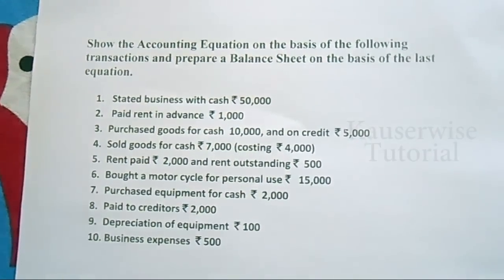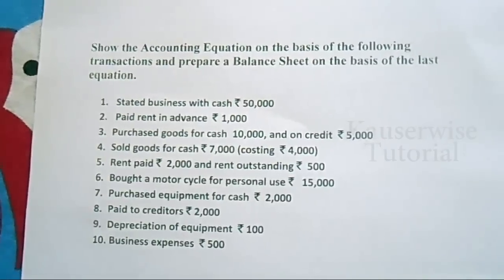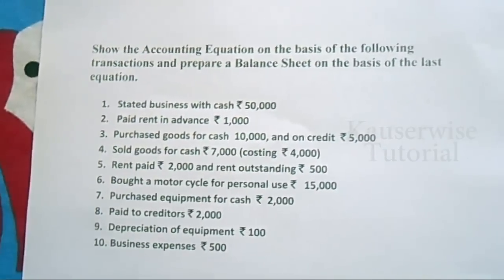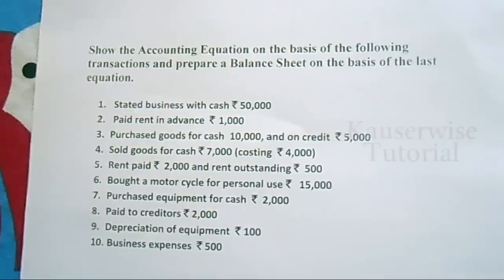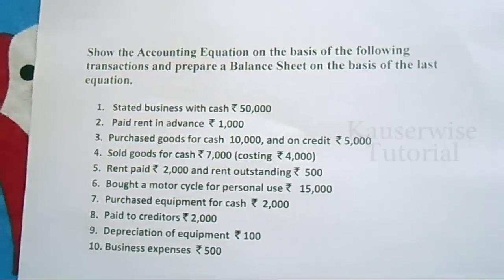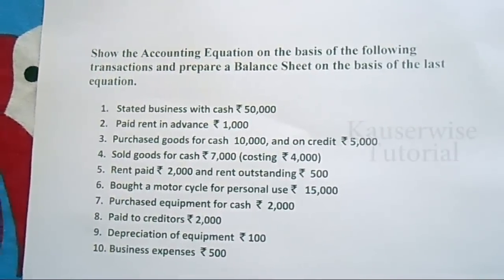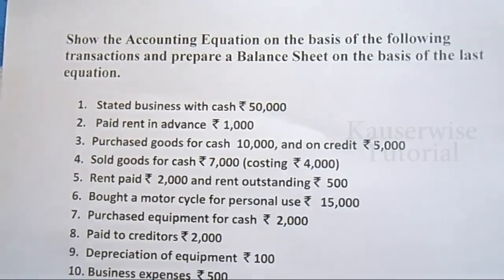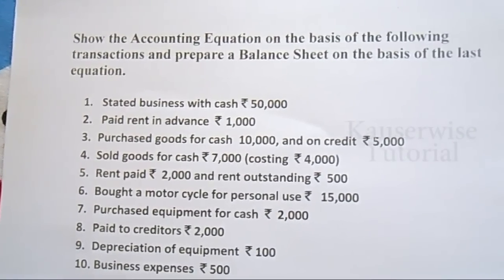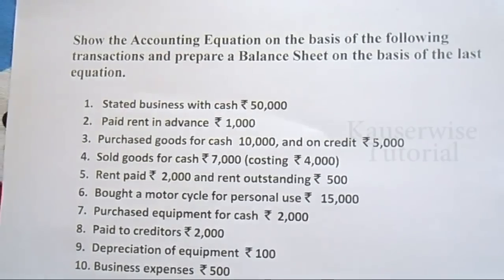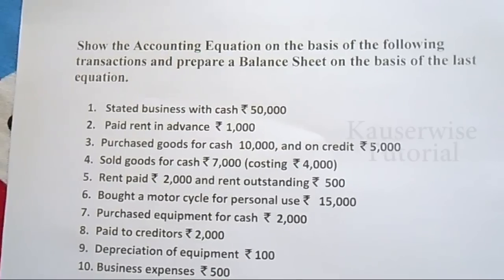Hi, in this video I am going to explain the accounting equation. Accounting equation is the base for accounting. For every transaction, whenever we record the transaction in the journal book, we need to know the basic logic. Every transaction has two effects: debit effect and credit effect. When you make any entry in the journal, you need to know that debit and credit.